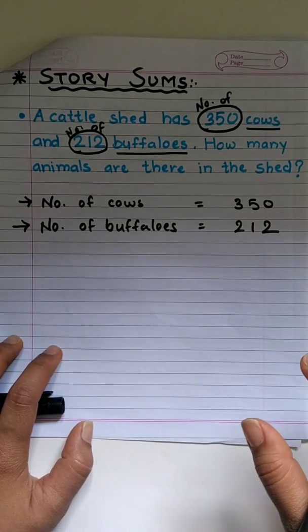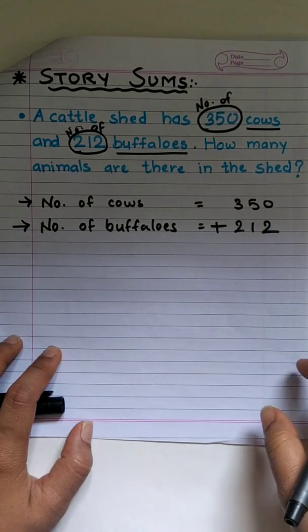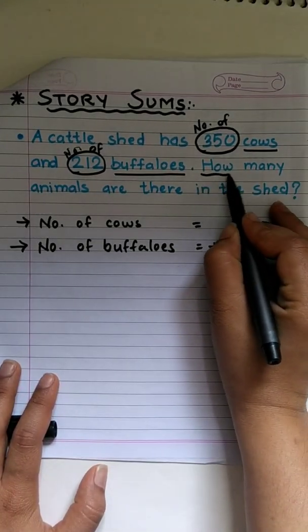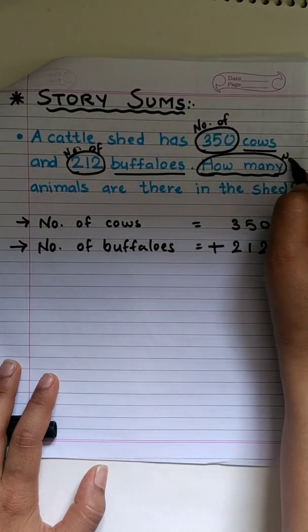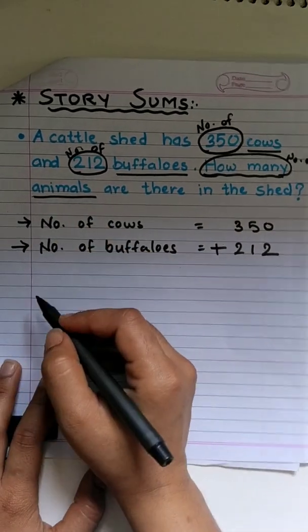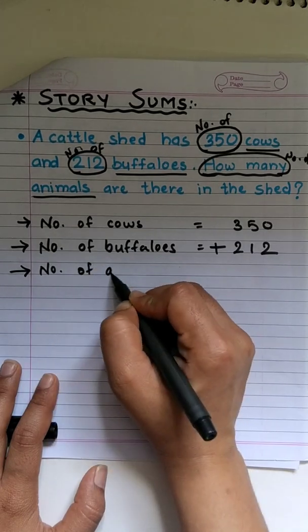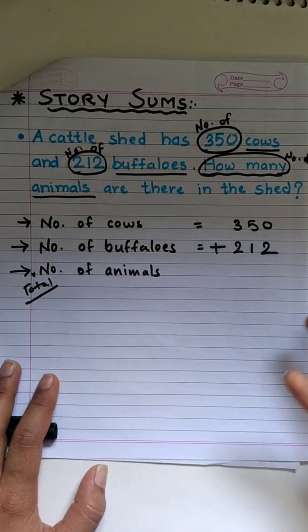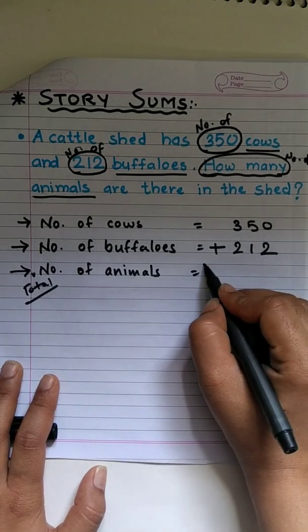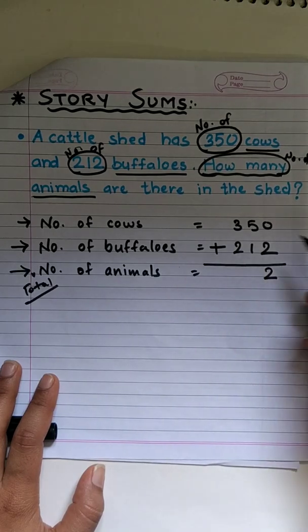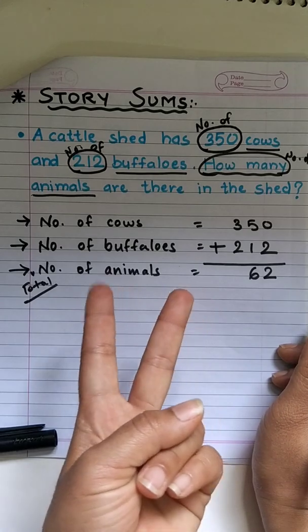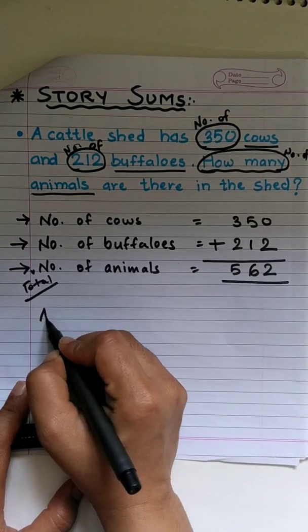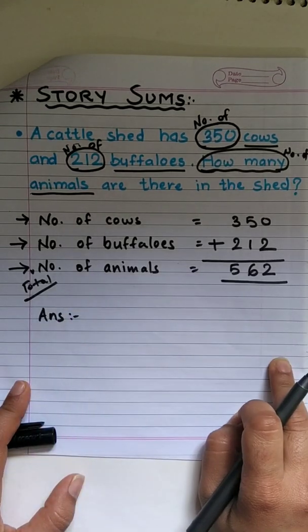First two statements were quite easy, right? Easy to form. Now, as we have to find the total we will add both of these. Now, third statement. Always remember, instead of how many, again we will write number of. Number of what? Animals. So, number of animals. We can also write total number of animals as this is the total. Ok? So, total number of animals or number of animals is 0 plus 2, 2, 5 plus 1 is 6, and 3 plus 2 is 4, 5. So, total number of animals turned to be 562. Our answer.